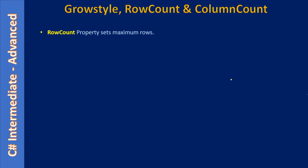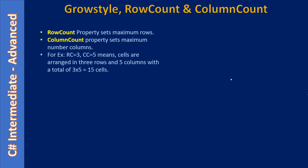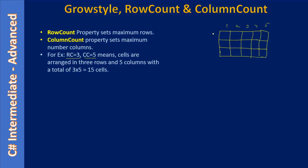The RowCount property sets the maximum rows, and the ColumnCount property sets the maximum number of columns. At design time we have six rows and one column, giving six cells. At runtime in the form load event we are going to set these two properties to define the number of cells. For example, if we specify RowCount as 3 and ColumnCount as 5, that means 3 rows and 5 columns — a total of 15 cells.